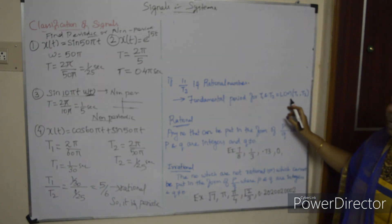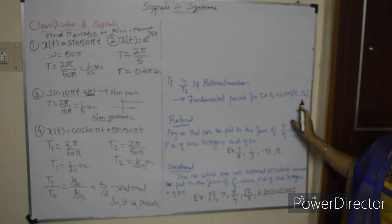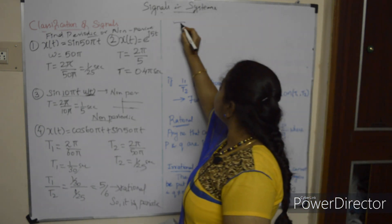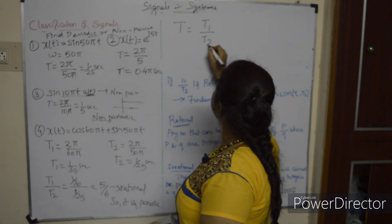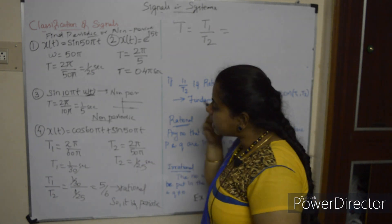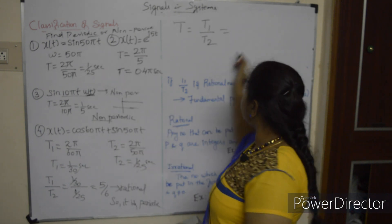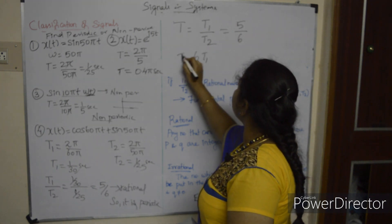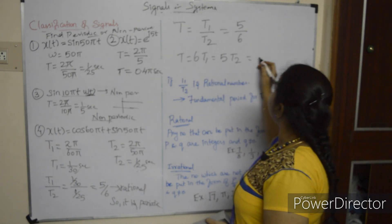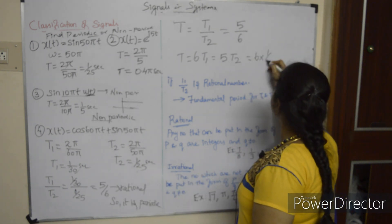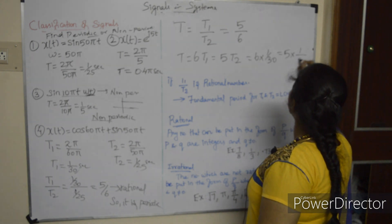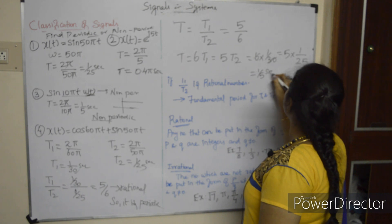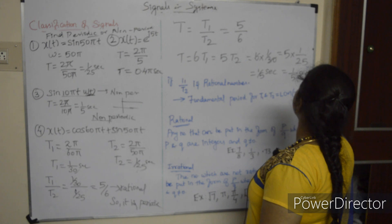Fundamental time period = LCM of T1 and T2. Using cross-multiplication: 6·T1 = 5·T2 → 6·(1/30) = 5·(1/25) → 1/5 = 1/5. So the fundamental time period T = 1/5 second.